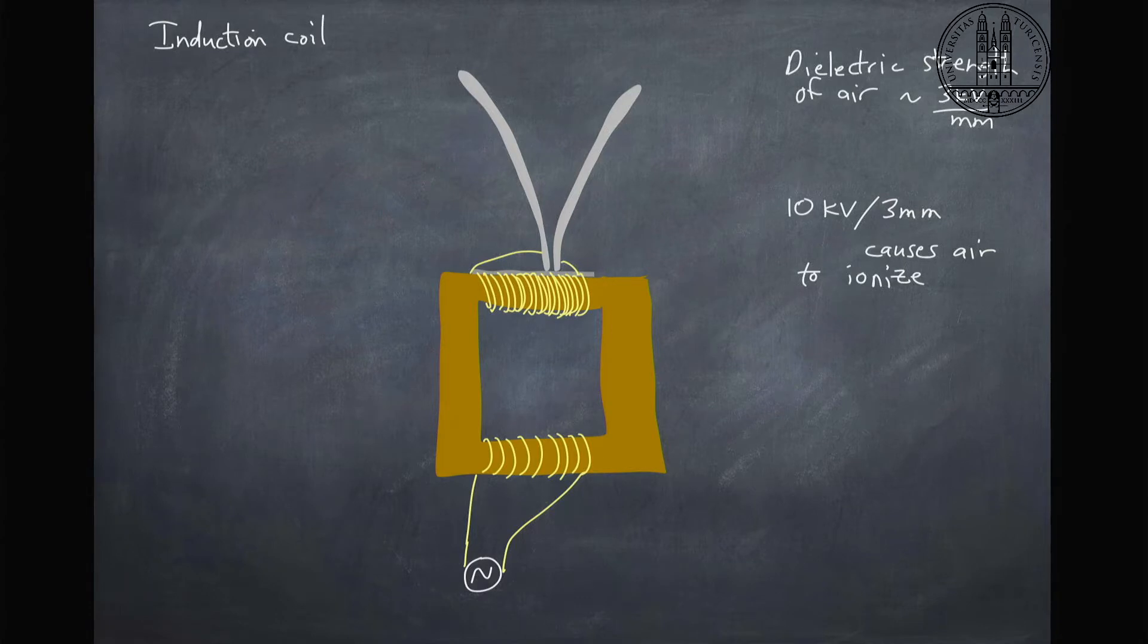We basically have produced a plasma. When these electrons recombine with our ions, we should see some type of spark. Because this process heats the air...